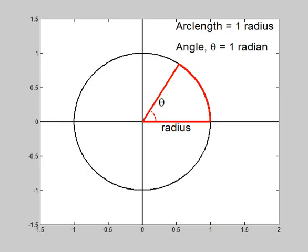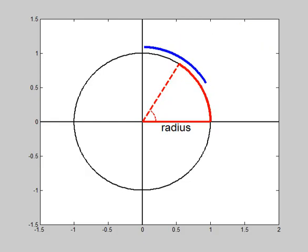If we double the arc length so that now we are viewing an arc length of two radii, then the new angle is two radians.